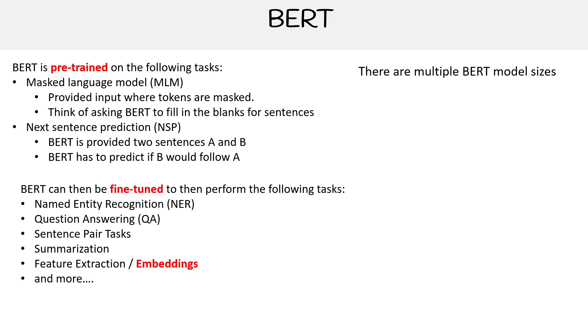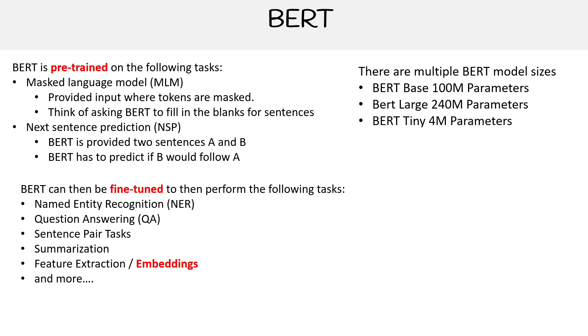BERT comes in many different sizes. You have the base, which is 110 million parameters; you have large, which is 340 million parameters; you have tiny, which is 4 million parameters; and there are about 24 or so additional model variants.